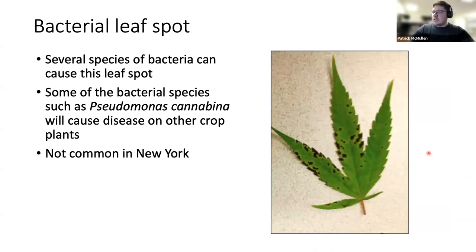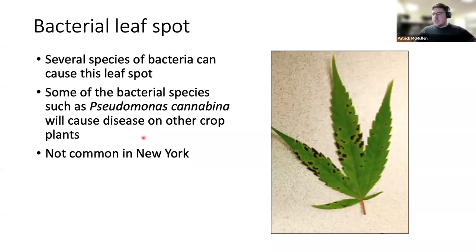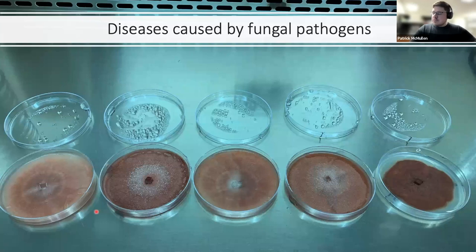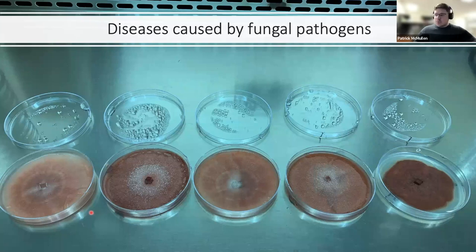There are also a number of bacterial leaf spots that have been observed. Several different species of bacteria can cause leaf spots, such as those causing black lesions on the leaf surface. Some bacterial species, such as Pseudomonas cannabina, can cause disease on other crop plants as well. While we have observed some of these leaf spots, they're not terribly common in New York. Bacterial pathogens have yet to be well characterized in hemp regarding their biology and epidemiology.